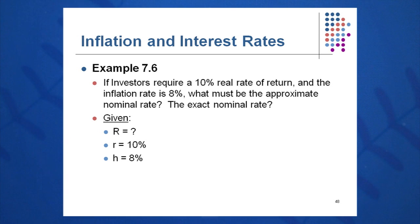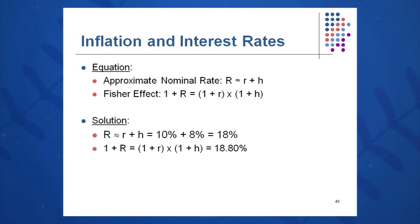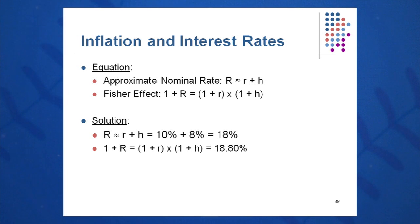Investors require a 10 percent real rate of return in this example, and inflation is 8 percent. What is the exact nominal or total rate? We're looking for big R. You've been given a real component, little r of 10 percent, and h of 8 percent, so add them together. The approximate answer is 18 percent. Taking the exact Fisher effect — one plus big R equals one plus little r times one plus little h — I plug in the mathematics and get 18.8 percent. So not a bad estimate using the approximate Fisher effect.